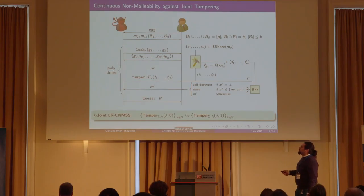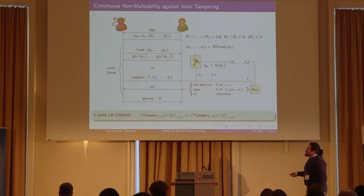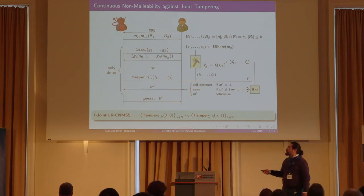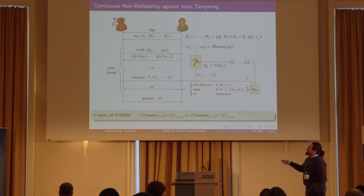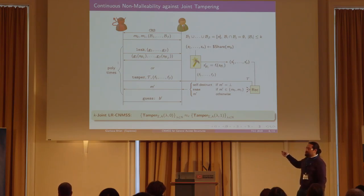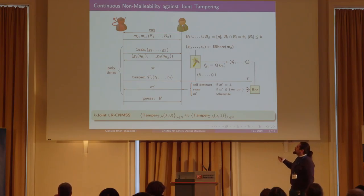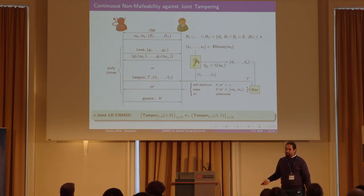Our definition is that a secret sharing scheme is a K-joint leakage-resilient continuous non-malleable secret sharing scheme if any polynomial-time attacker cannot distinguish between a secret sharing of message M0 or a message M1 except with negligible probability.